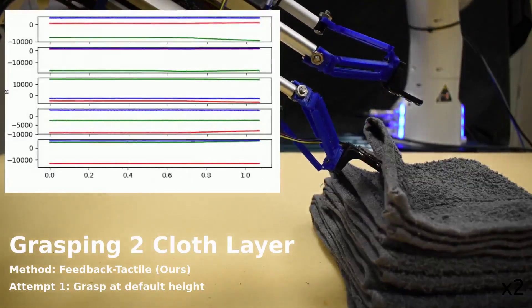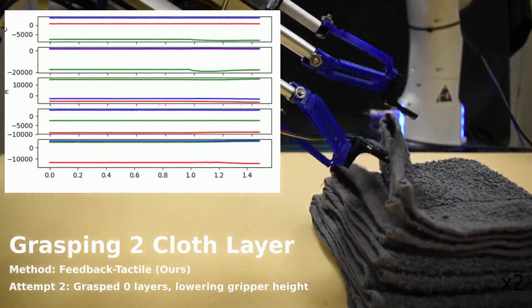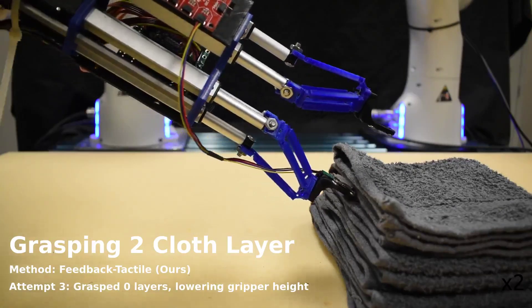We also evaluate our classifier on grasping two cloth layers. We found two layer grasping more difficult due to more interactions between the cloth layers, but our method still succeeds.